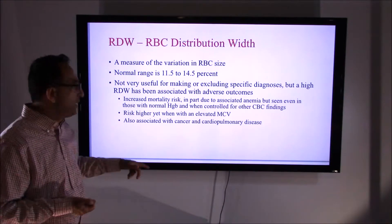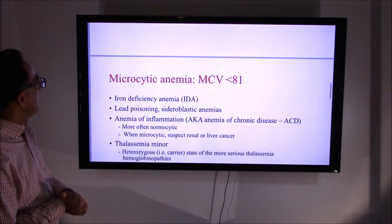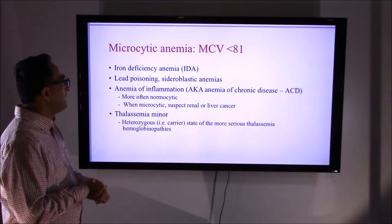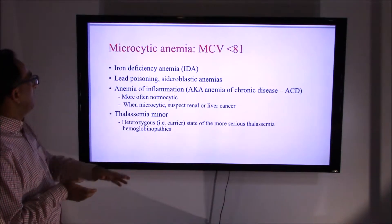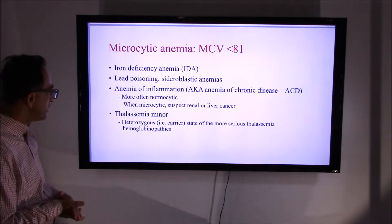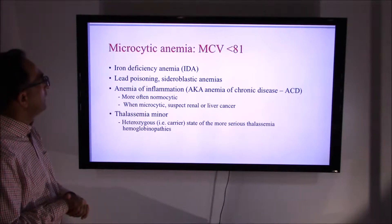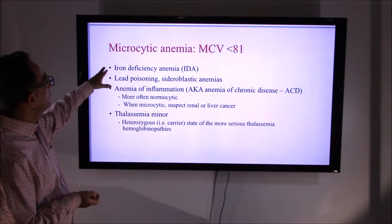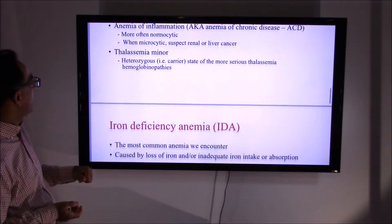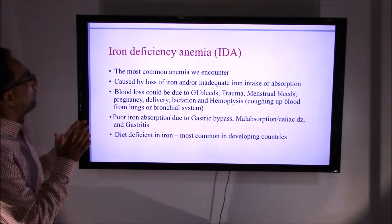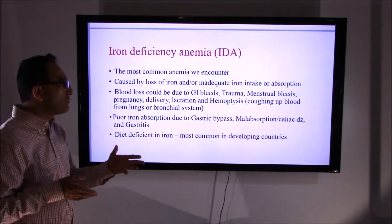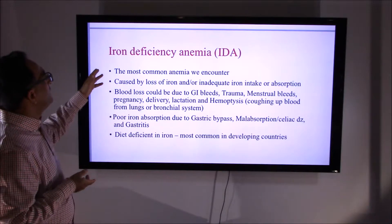Microcytic anemia involves a smaller than normal mean corpuscular volume. You would commonly see this in iron deficiency anemia, sideroblastic anemia, anemia of inflammation, and thalassemia. In life underwriting throughout your career, you will notice that the most frequently encountered anemia is iron deficiency anemia.